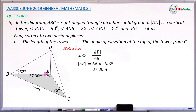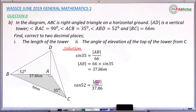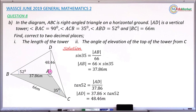You can now use the distance A, B together with angle 52, using the tangent ratio to find the length of the tower A, D. A, D is opposite and A, B is adjacent. So tangent of 52° equals A, D divided by 37.86. Cross-multiplying, A, D equals 37.86 multiplied by tangent of 52. If done correctly, that gives A, D as 48.46 meters. This is the length of the tower, so part one has been answered.